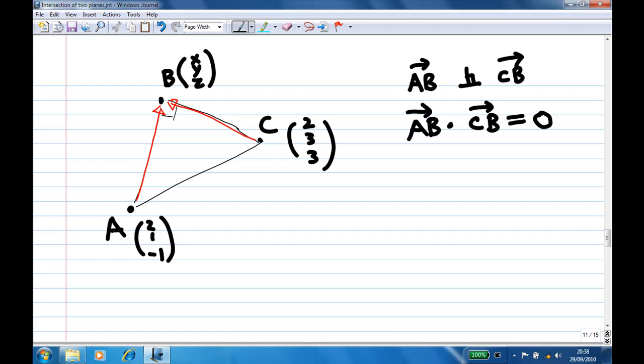So then how do I find the dot product? I must know what is AB and CB. So let's try to find out what is AB here. AB is, take the difference in coordinates: x minus 2, y minus 1, z minus minus 1 becomes z plus 1. This is AB.